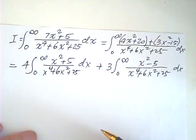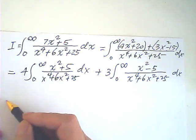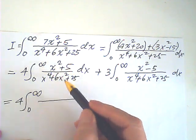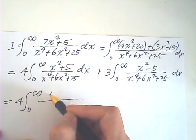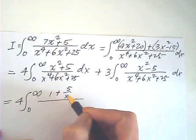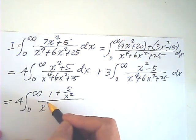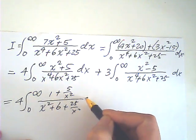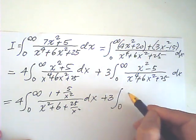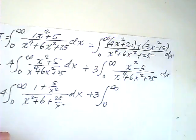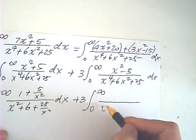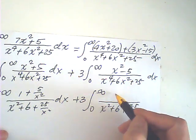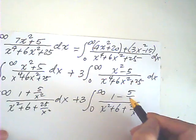That's correct. Now, then, I divide the numerator and denominator both by x squared. So, this would be 1 plus 5 over x squared. This would be x squared plus 6 plus 25 over x squared. This would be 1 minus 5 over x squared.